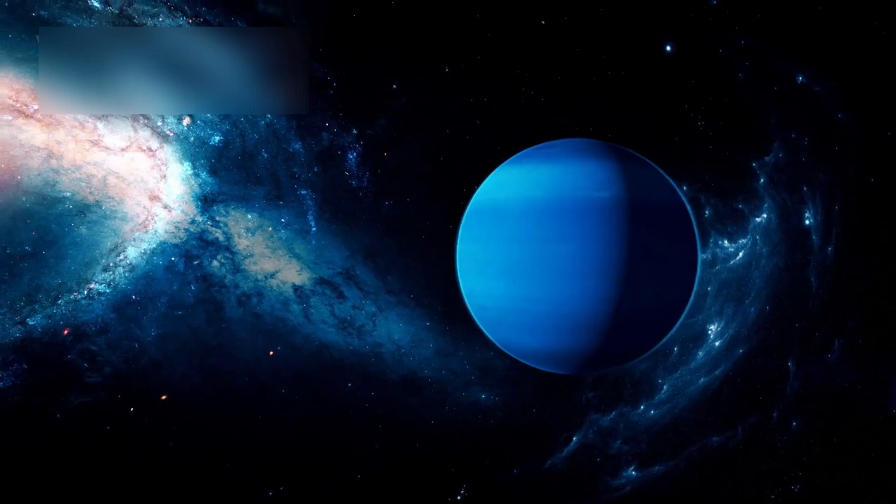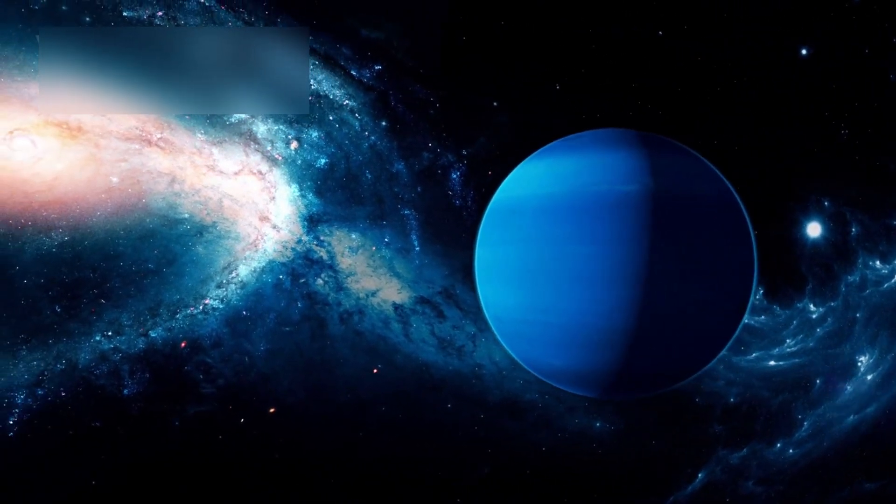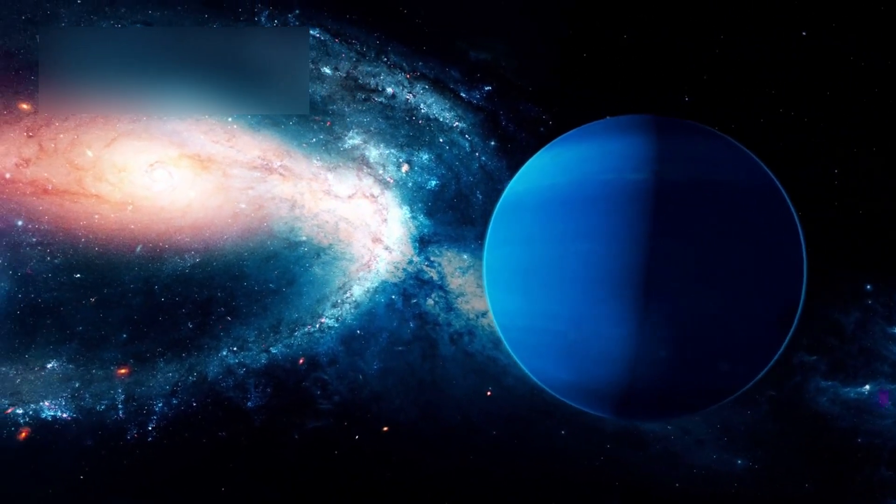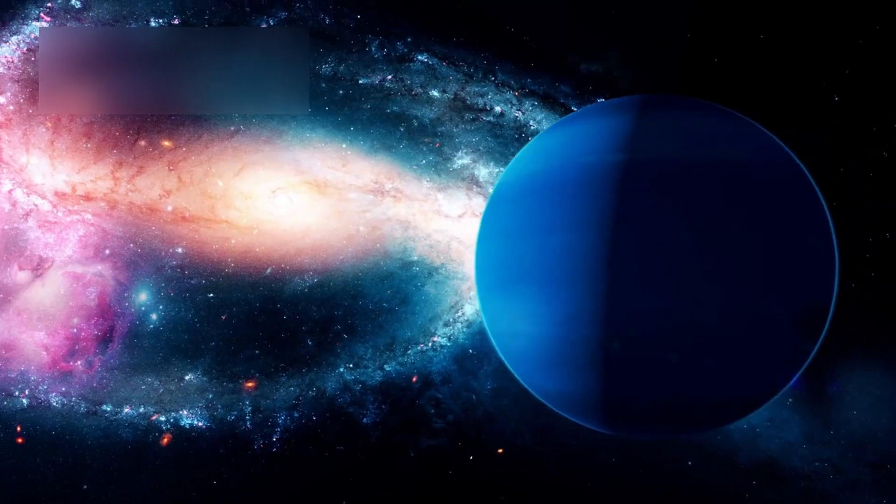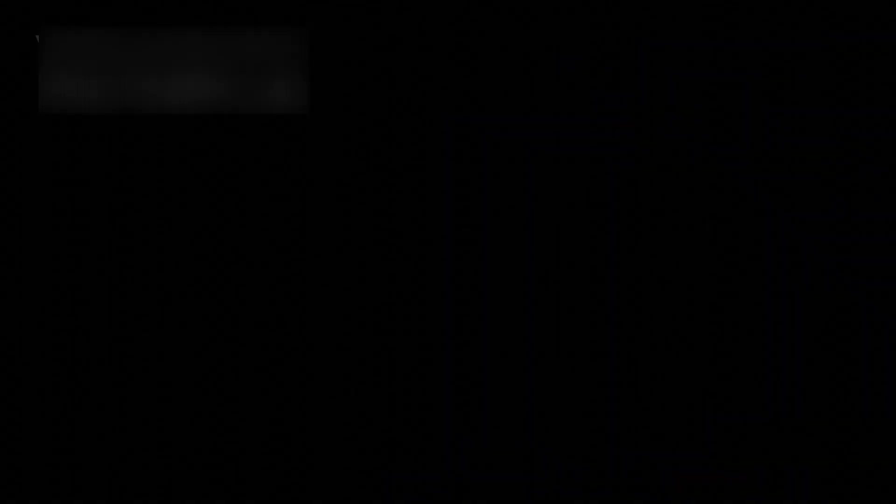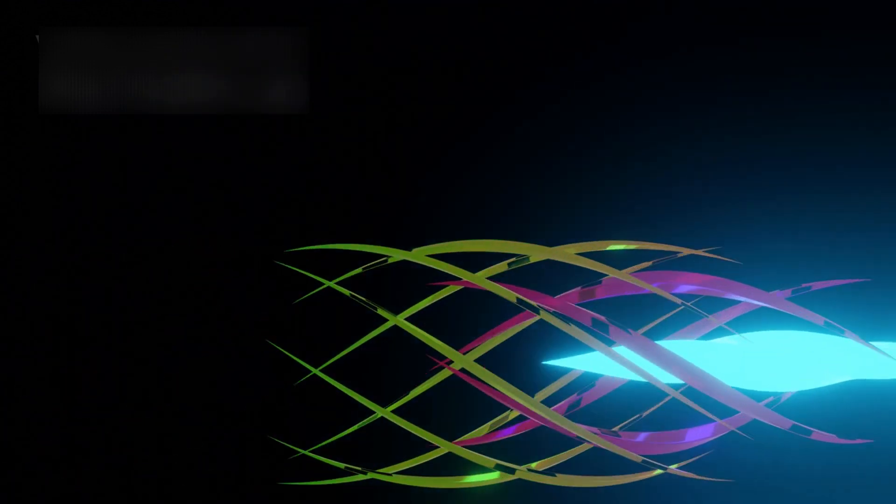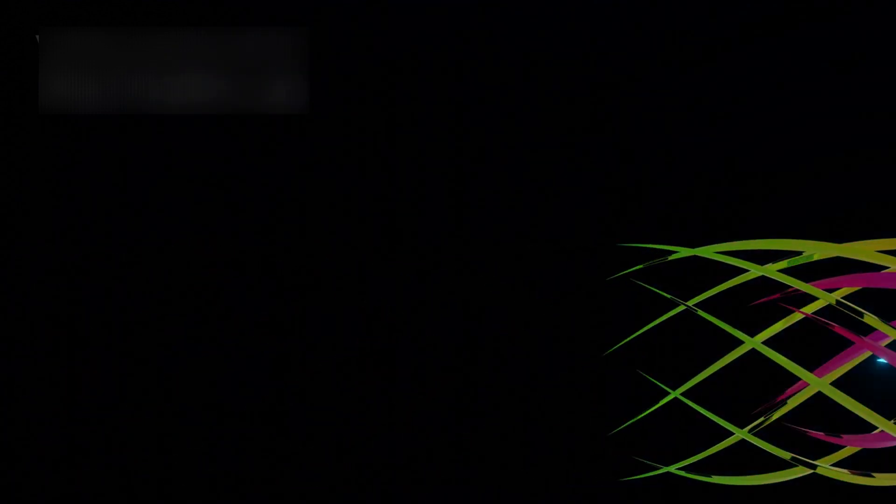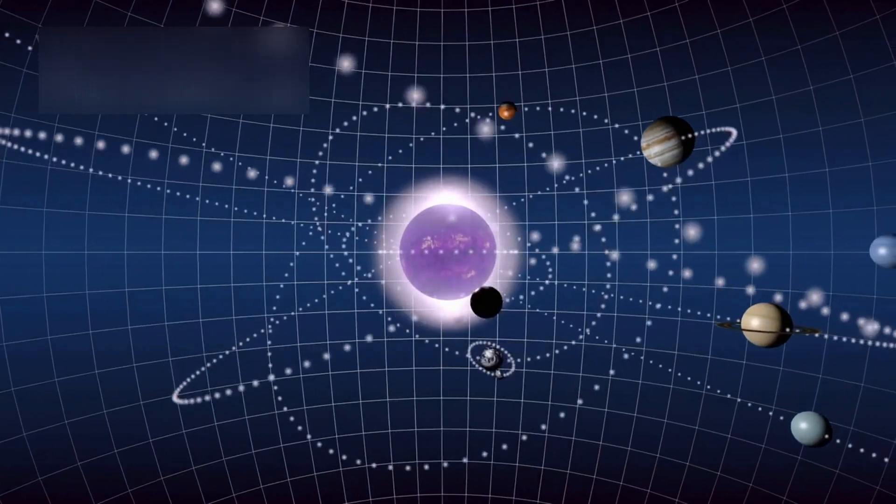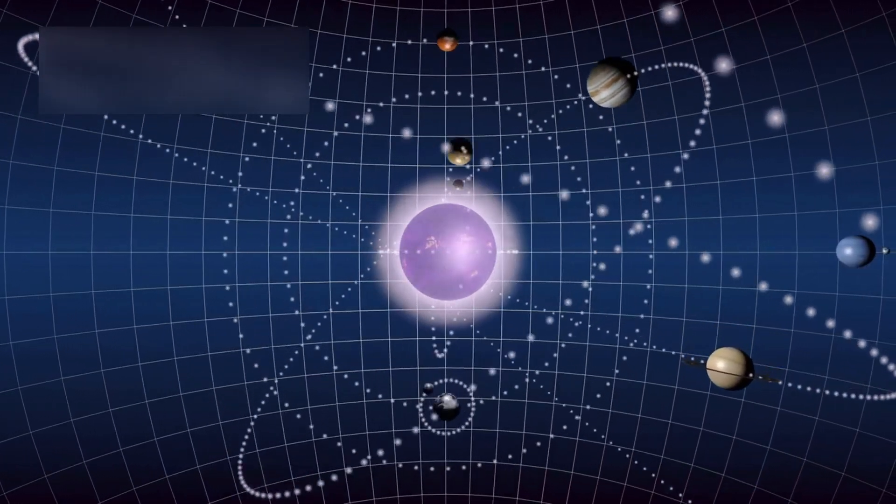A unique world. K-218b belongs to a class known as sub-Neptunes, planets larger than Earth but smaller than Neptune. This category doesn't exist in our solar system, making K-218b both fascinating and puzzling. Standard comparisons like Earth, Mars, Jupiter, or Saturn do not apply here.